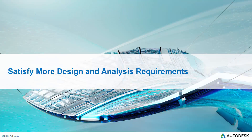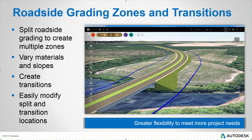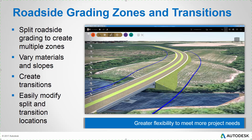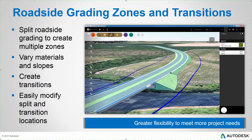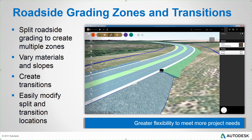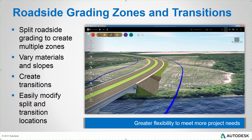Now let's talk about how InfraWorks 360 allows you to satisfy more design and analysis requirements for your projects. You can now split roadside grading to create multiple zones. In the case of this bridge area, I might want to change the slope and the material close to the bridge. To do that, I simply click the roadside grading area, right-click, and pick Split Grading. I'll choose a location where I want the split to take place, and in the newly created zone, I can assign a different material and a different slope. I can also right-click the point where the two areas meet and select Add Transition, then pick a location for the end of the transition, and InfraWorks 360 will make the transition smooth from one zone to the next.